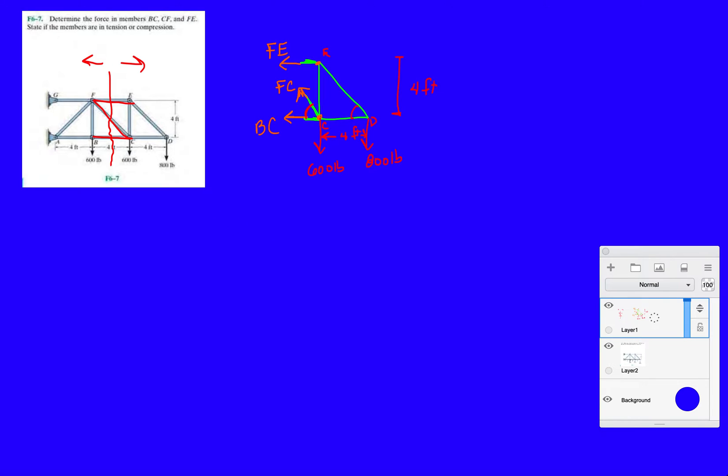Now just like in method of joints, you pretty much only did forces in the X, forces in the Y. Method of sections, the most efficient way to do these problems is just take a moment about a point. Let's take a moment about a point where I'm going to be able to eliminate the most unknowns, and that point is going to be F. I call it the ghost point.